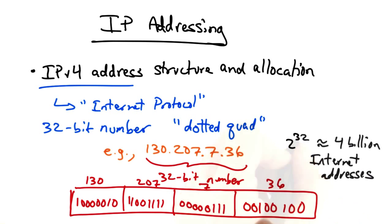This structure allows for 2 to the 32, or about 4 billion Internet addresses. Now that sounds like a lot of addresses. As it turns out, it's actually not enough, and we're running out of IP addresses, as I'll discuss in a later lesson.